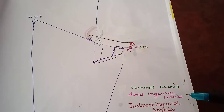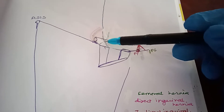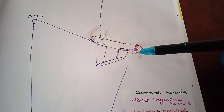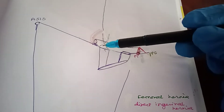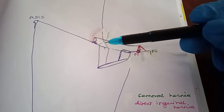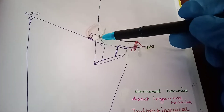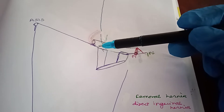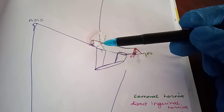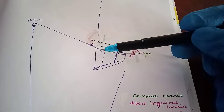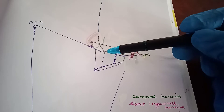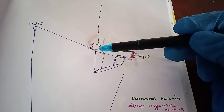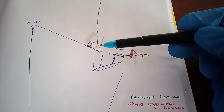Direct inguinal hernia: there is a defect in the posterior wall of the inguinal canal. In the medial half of the inguinal ligament, the floor is formed by the inguinal ligament, and Hesselbach's triangle is a triangular defect on the posterior wall of the inguinal canal. Its lateral boundary is divided into superolateral and inferolateral. The superolateral boundary is formed by the inferior epigastric artery, the inferolateral boundary by the inguinal ligament, and the medial boundary by the lateral most border of the rectus sheath.